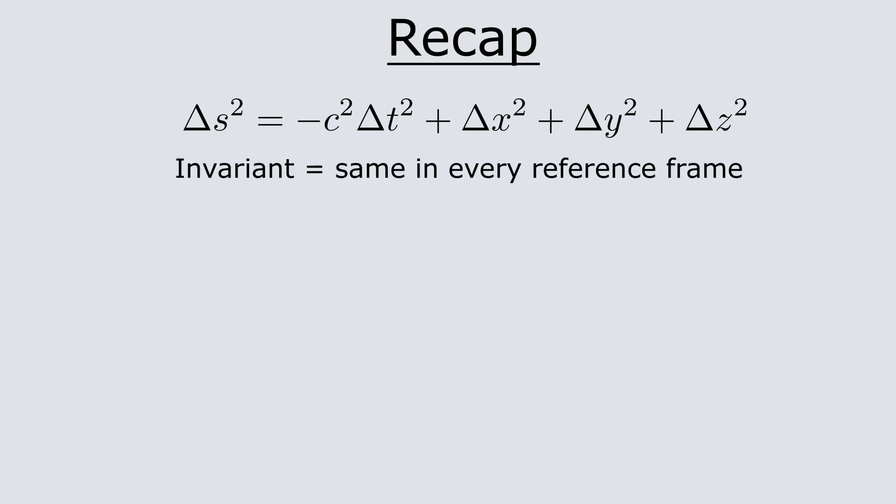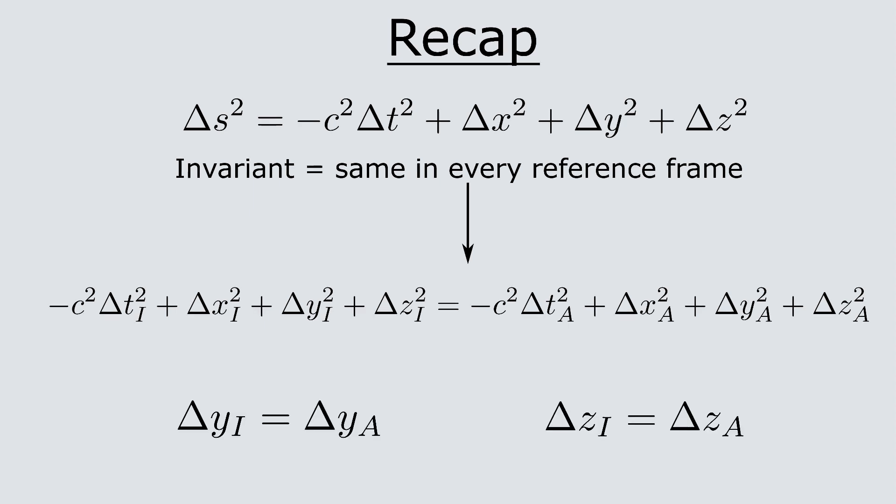Well, in my last video, I showed that there's a quantity, delta s squared, that does not change between reference frames. In other words, it's an invariant. If we assume that Albert is just traveling in the x direction, then that means that nothing is different between the two reference frames in the y and z directions. So these terms will just be the same on both sides of the equation and cancel off.